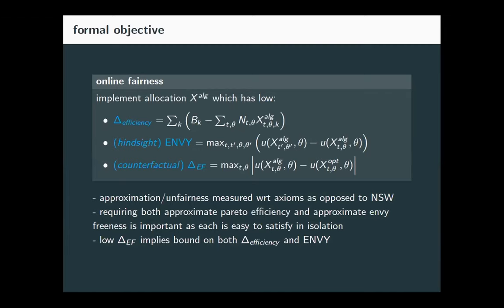There's one more metric that's much more useful: counterfactual envy, which we call Delta EF. While the earlier envy definition is hindsight envy, counterfactual envy is the difference between the utility of the agent for the allocation received minus the utility under the optimal offline allocation X_opt — the allocation you'd make with full future knowledge. This says each agent should be almost as happy as if they'd received the optimal offline allocation.